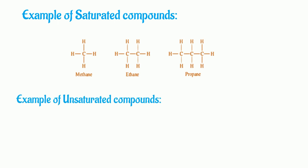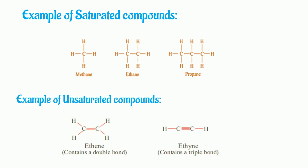Examples of unsaturated compounds: ethene and ethyne. Ethene contains a double bond and ethyne contains a triple bond.